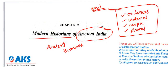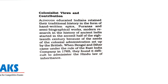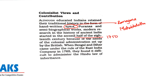Similarly, modern historians of ancient India have given a lot of evidence to reconstruct ancient Indian history. However, a proper and eloquent understanding of ancient Indian history was not done by Indians themselves. Educated Indians retained some traditional histories in the form of handwritten epics like the Ramayana, Mahabharata, Puranas, and semi-biographical works. But modern research to produce an authenticated text on Indian customs and laws started only in the second half of the 18th century, due to the colonial administration set up by the British.